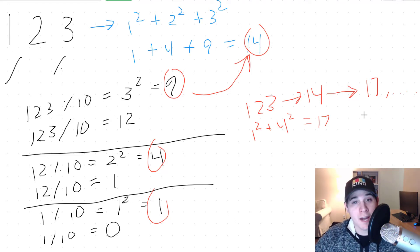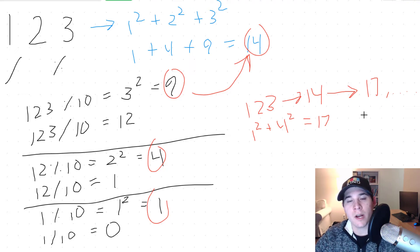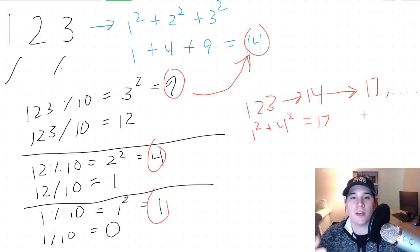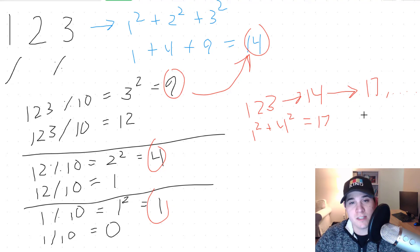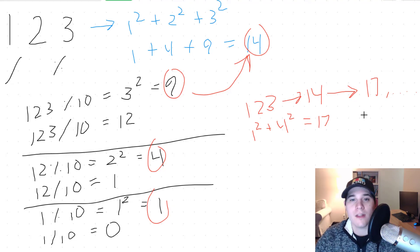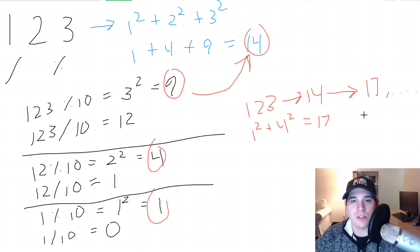If we encounter a situation where both our tortoise pointer and our hare pointer are both 1, then our input is a happy number. If that's not the case — if we find a cycle and it's not equal to 1 — then it's not a happy number. Let's jump over to the code and I'll show you how we can implement this.